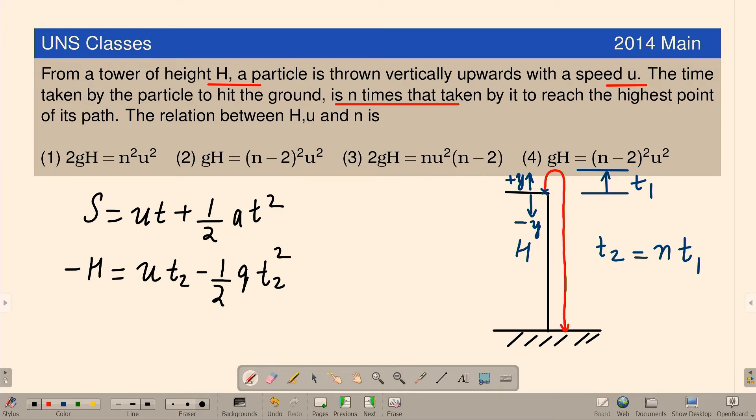We can find out T1 always. How to find out? V is equal to U plus AT. When it reaches the top, velocity is equal to 0. Initial velocity U minus GT1, or you will get an expression U is equal to GT1, or from there we can get one expression T1 is equal to U divided by G.